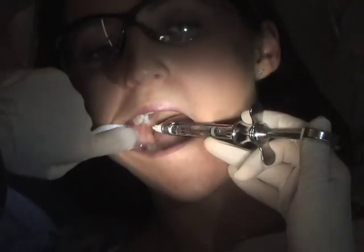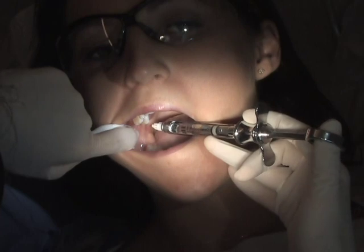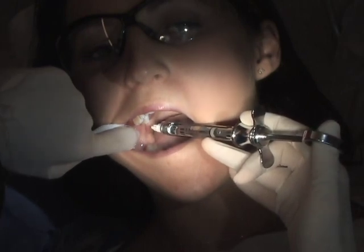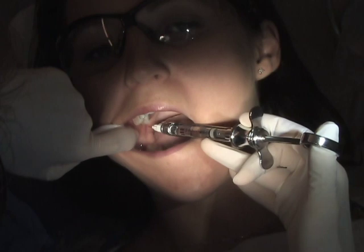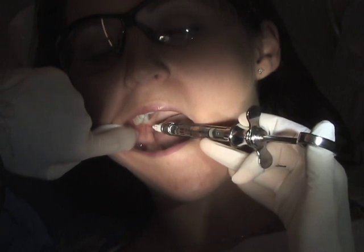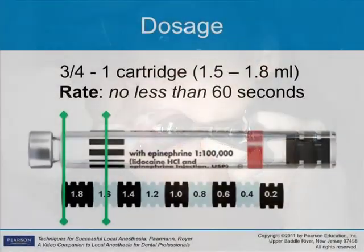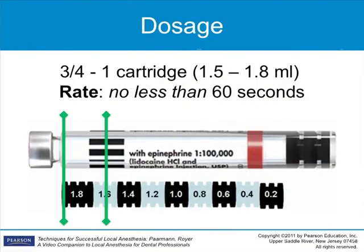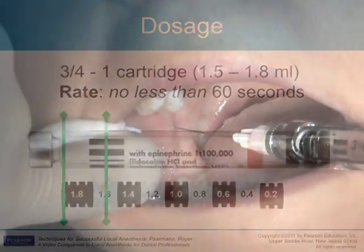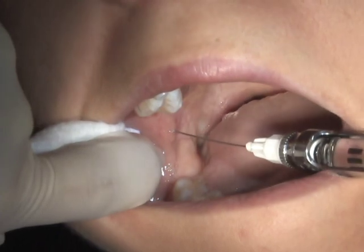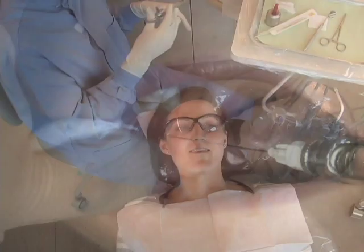Withdraw one millimeter and aspirate at this deposition height. Aspiration may occur more than once. After injecting a half carpule, it is prudent to aspirate at least one more time. Deposit a minimum of 1.5 milliliters, or about three-fourths of the cartridge. If doing a buccal injection, you will be able to use the remaining fourth of the carpule for that subsequent injection. After depositing, gently remove the needle and make the needle safe.